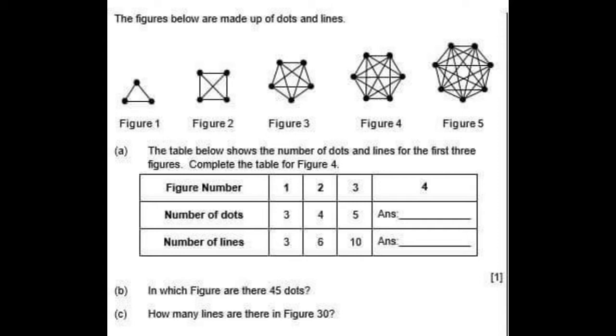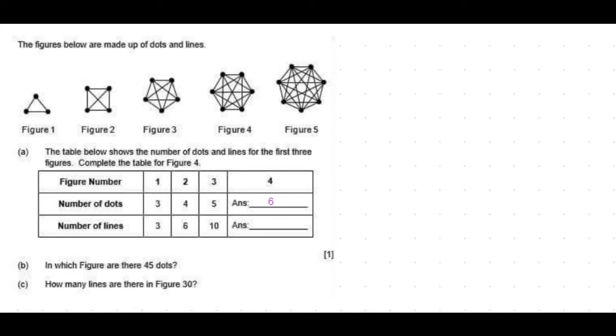The number of dots is increasing by one. For figure one there are three dots, figure two has four dots, figure three has five dots. So figure four will have six dots.